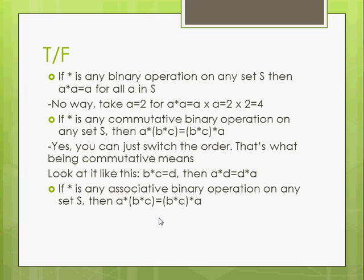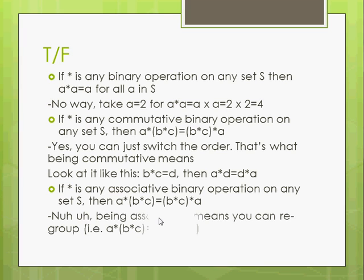So another one, star is associative this time. Is A star B star C equal to B star C star A? Well can you get from the left side to the right side by just regrouping? We could write A and B together with C off to the right but we can't just flip the order for associativity, for an associative binary operation. So in this case it'd be no.